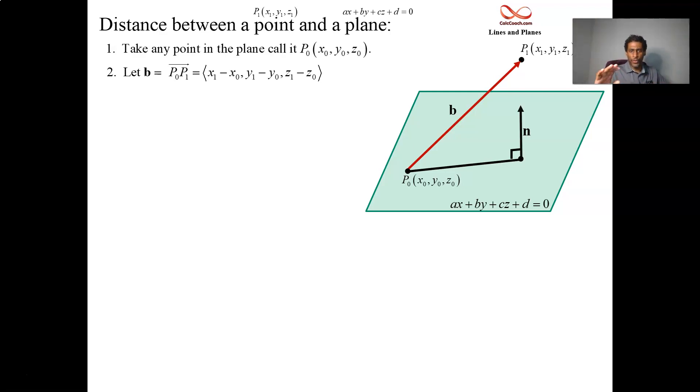So here's what we're going to do. We are going to project the vector B onto the normal vector. The shadow of B onto N will be a vector and how long that vector is will be the answer to the question, the distance.